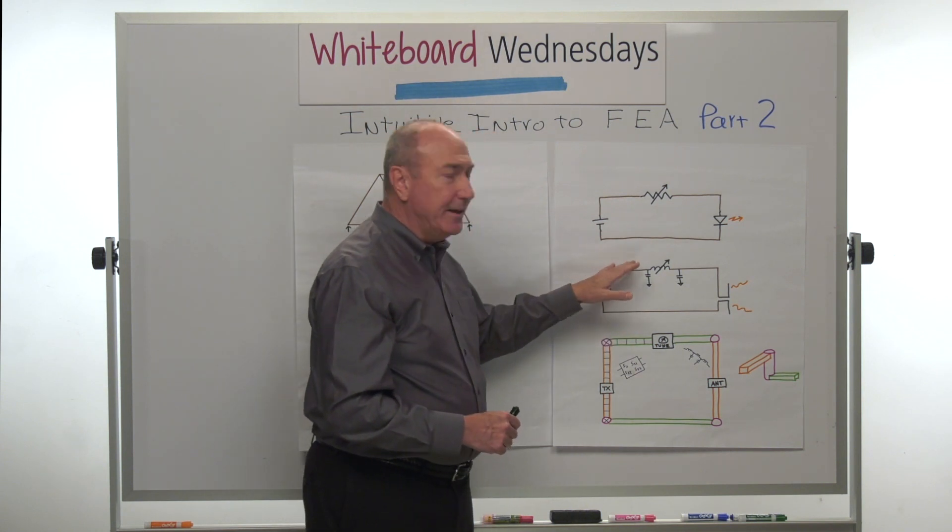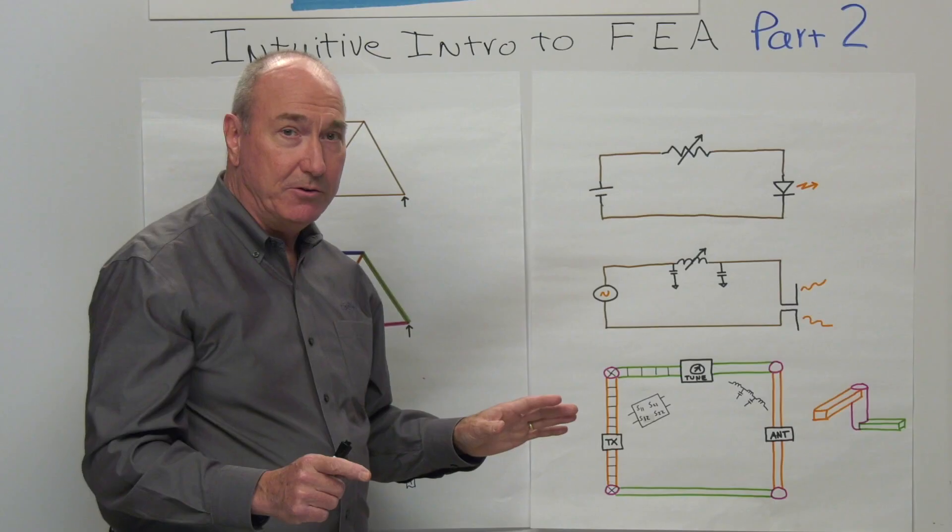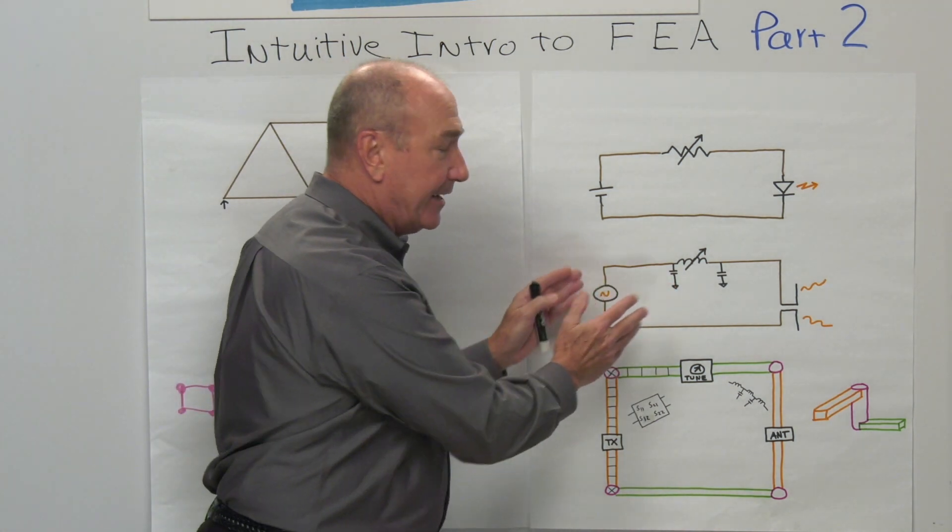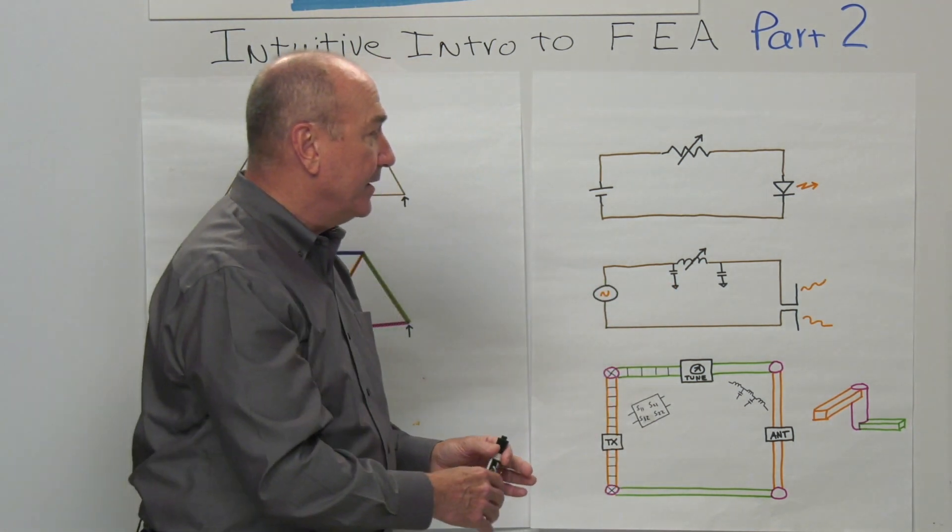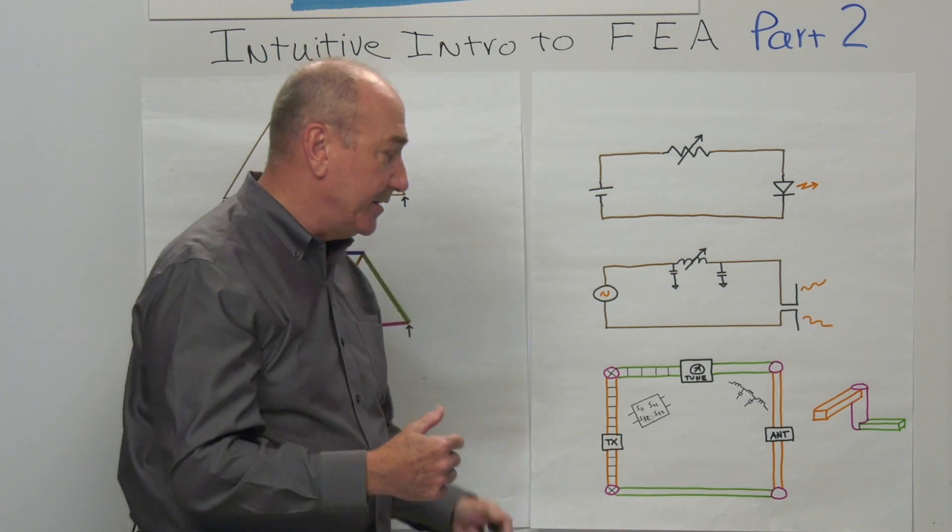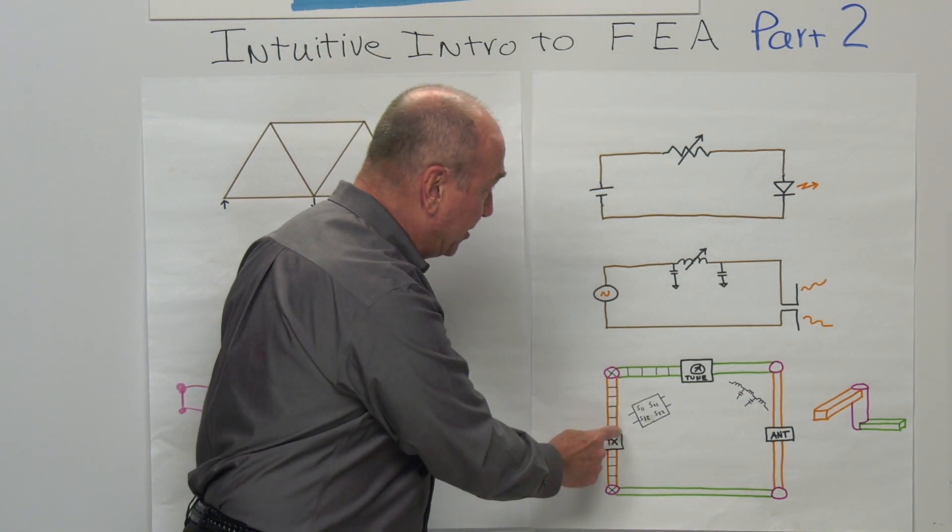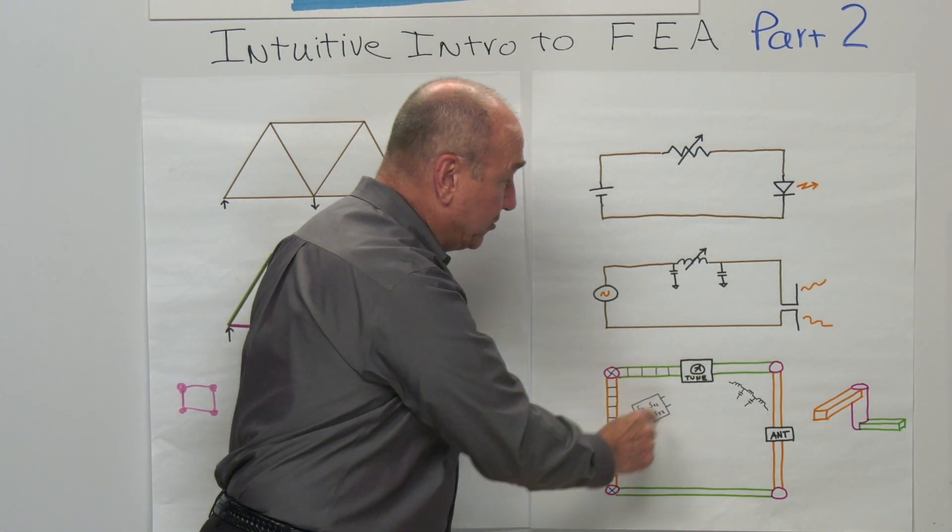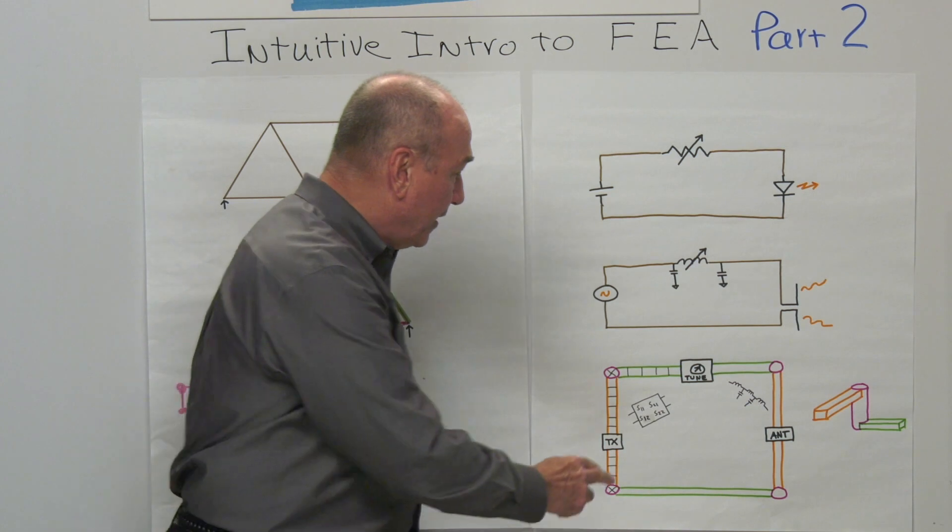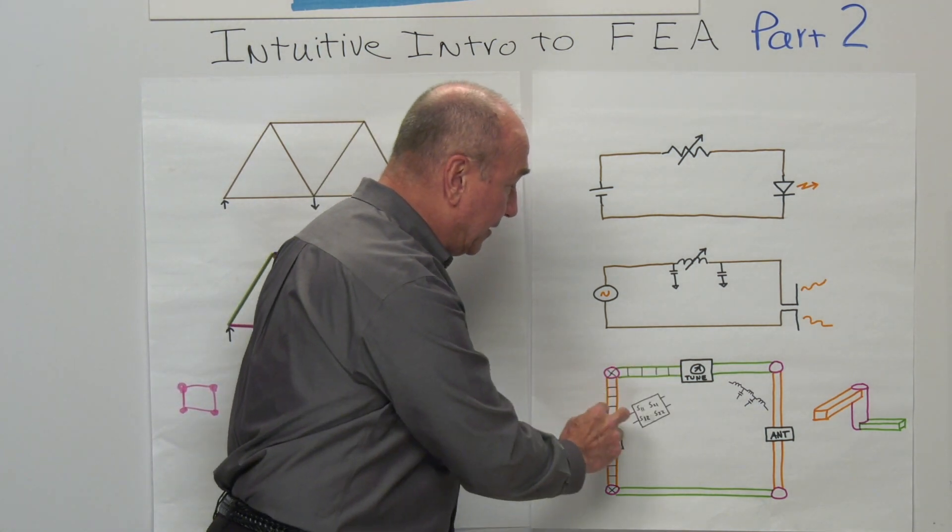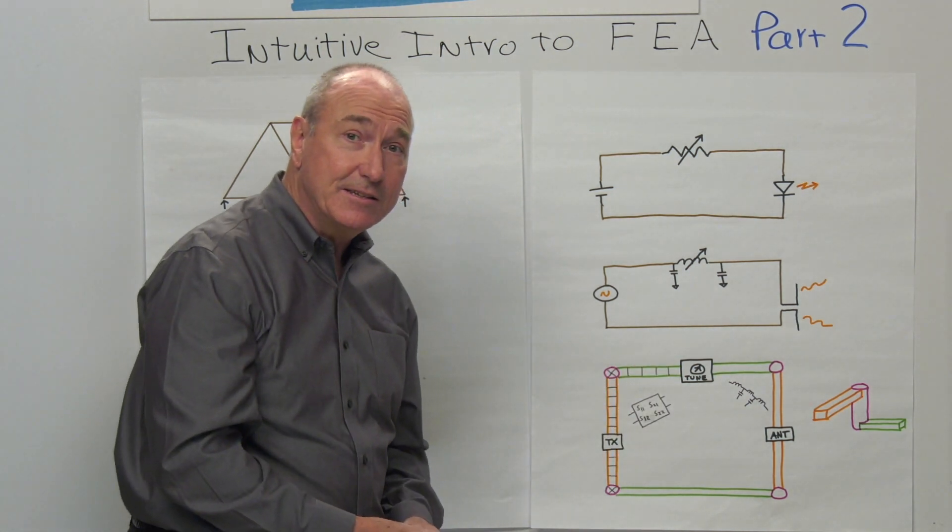But this circuit isn't really what's built, because when you take this ideal circuit and put it onto a printed circuit board, now we have other things that come into the picture. Let's say this transmitter is a chip, this tuner is some kind of control knob component, and our antenna is hooked up over here, but we have metal traces on the printed circuit board connecting these things together.